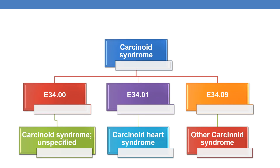Coming to carcinoid syndrome, the final code E34.00 is coded for carcinoid syndrome unspecified. E34.01 is given for carcinoid heart syndrome, and E34.09 is given for other carcinoid syndrome.